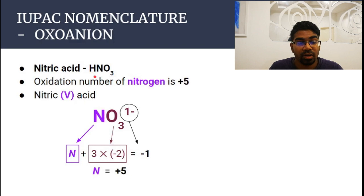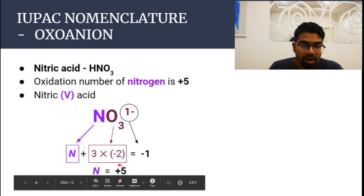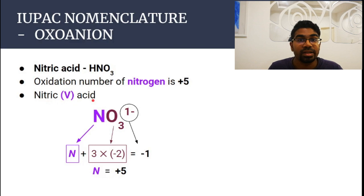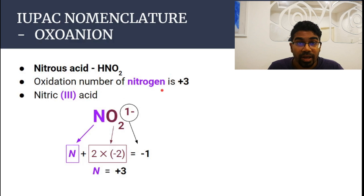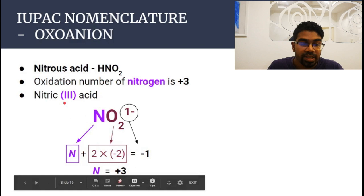Look at nitric acid, a very commonly used chemical in labs. The oxidation number of nitrogen in nitric acid is calculated to be plus five, so its IUPAC name is nitric(V) acid — not simply nitric acid. Comparing this to HNO2, whose common name is nitrous acid: using IUPAC nomenclature, we calculate the oxidation number of nitrogen to be plus three, so it is called nitric(III) acid.